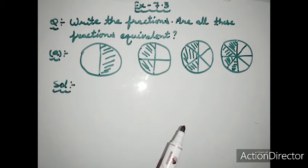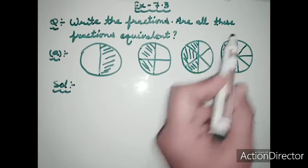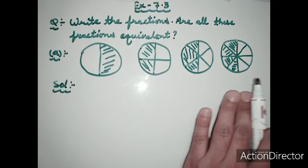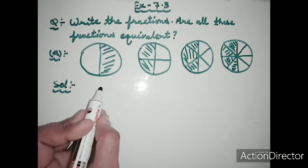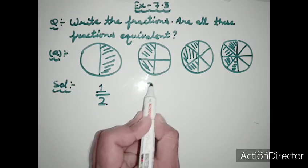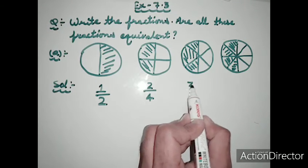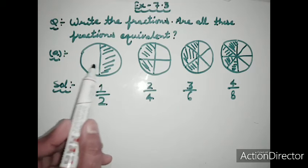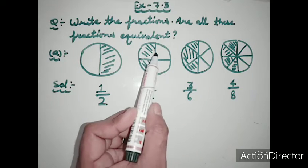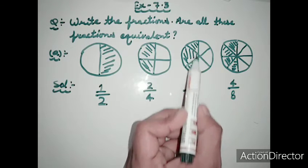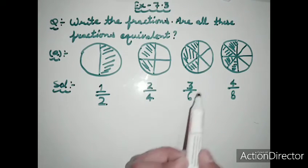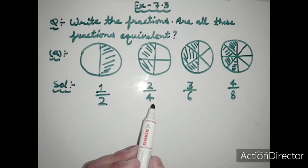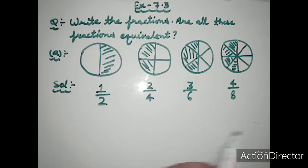Now we solve Exercise 7.3 Question 1: are all these fractions equivalent? First we write the fraction form of all the pictorial figures: the shaded parts are 1 upon 2, then 2 upon 4, then 3 upon 6, then 4 upon 8. Total shaded part 1 out of 2 total parts; 2 out of 4; 3 out of 6; 4 out of 8. If we reduce all these fractions to simplest form we get 1 upon 2 each time.